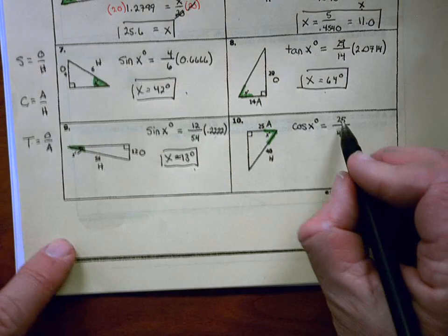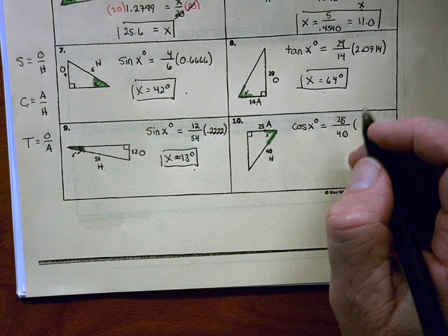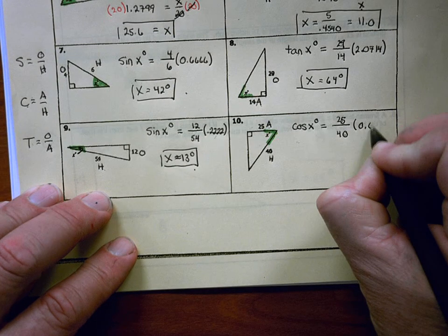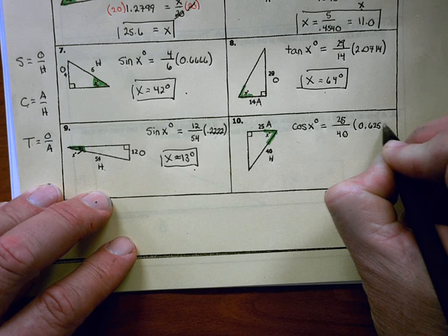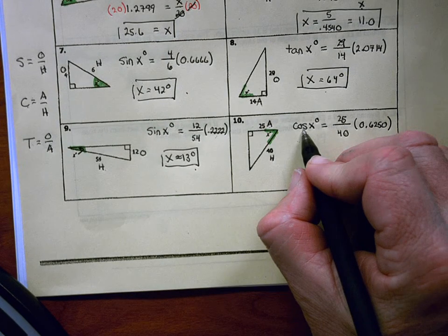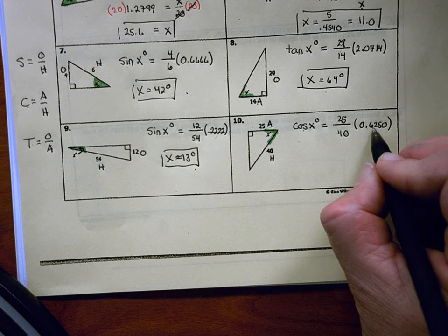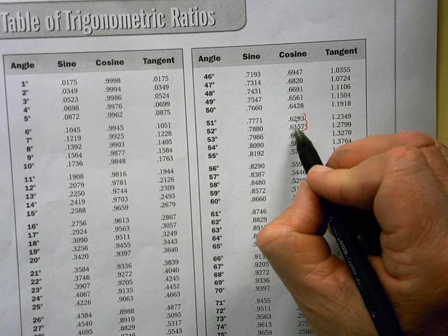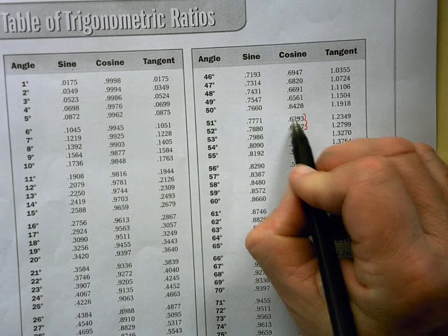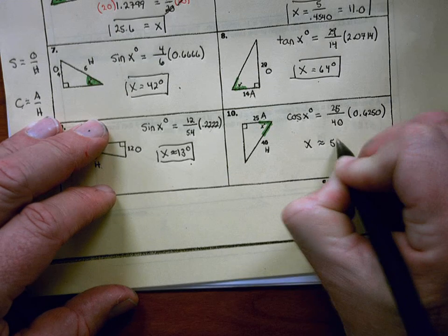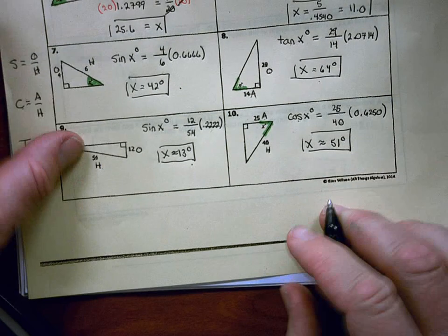My next step to solve is convert 25 over 40 into its decimal equivalent by dividing. 25 divided by 40 gives me the decimal 0.625. And now I'm going to look under the cosine column. And I'm going to try to find the decimal 0.6250. So you can see on my chart, here's my cosine column. I'm looking for 0.6250. And you can see I can't get to it exactly, but it's pretty close to that. So the angle that correlates is 51 degrees. So number 10, x is approximately 51 degrees. Okay? So that's how you would do number 10.